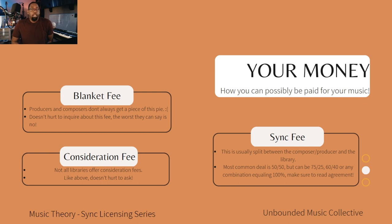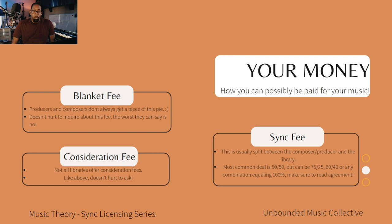Lastly, we have the sync fee — this is usually split between the composer, the producer, and the library. The most common deal is 50/50, but it can be 75/25 in the library's favor, 60/40, or any combination adding up to 100. You want to make sure you read the agreement. If you want me to show an example of a library offering a 75/25 split in favor of the library, let me know in the comments below.